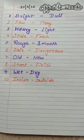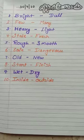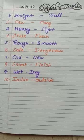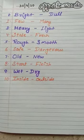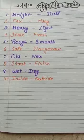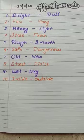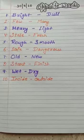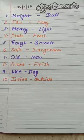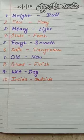Fifth one is rough, smooth. R-O-U-G-H. Rough means kathor. S-M-O-O-T-H, smooth. Smooth means chikna.